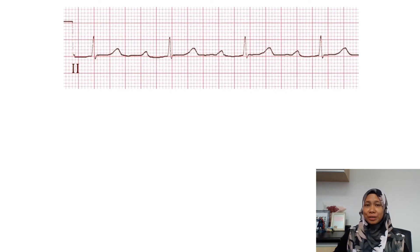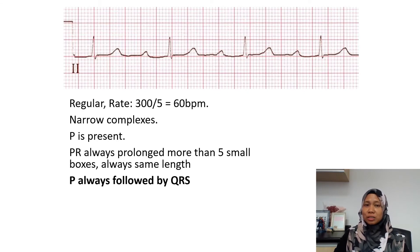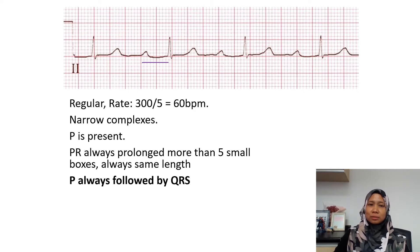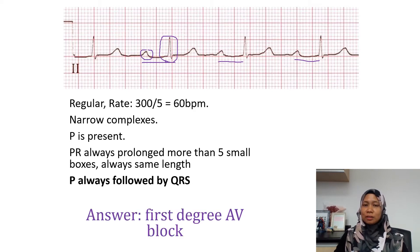So we can see that it is regular. The R-to-R interval is the same throughout the strip. And we can see it is narrow complex. The P wave is present. However, the PR interval is prolonged. We can see that the PR interval here is very prolonged — it is more than five small boxes. However, the PR interval is always of the same length, and the P is always followed by QRS complex throughout the strip.